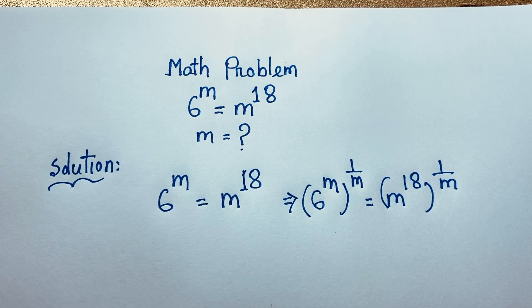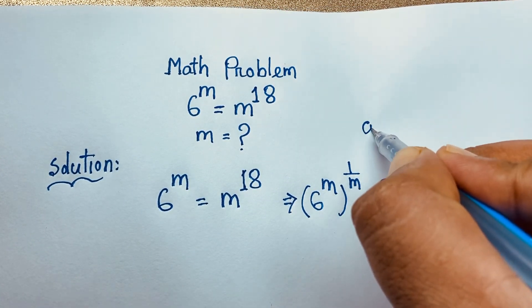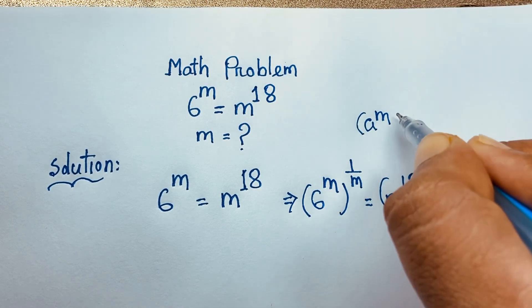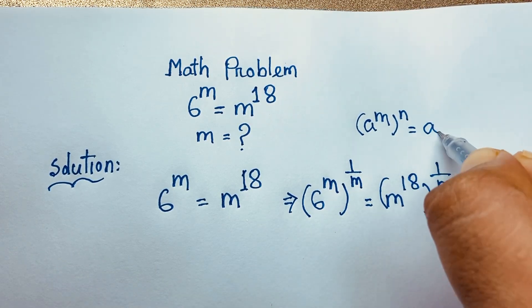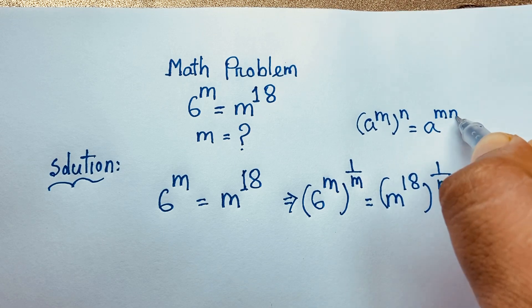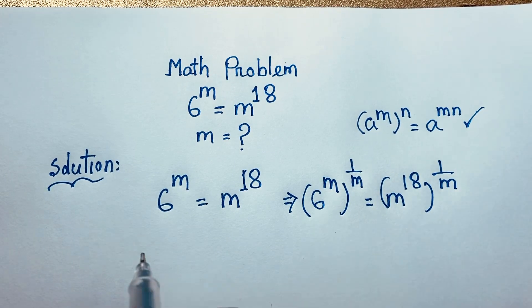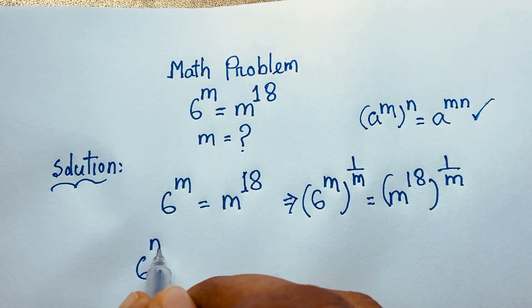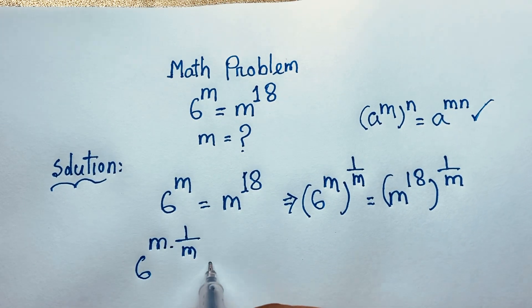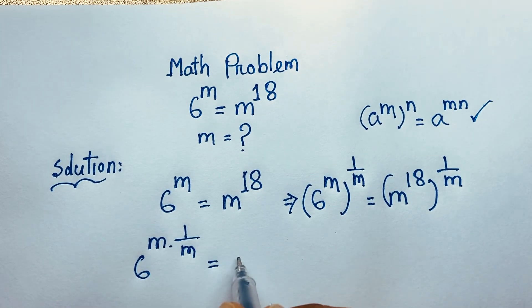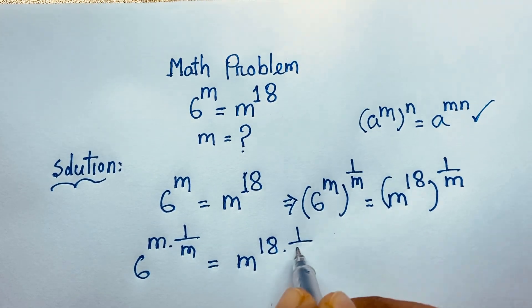Now, according to the exponential formula, we know that a to the power m, bracket whole to the power n, equals a to the power m·n. If I apply this formula, it will be 6 to the power m times 1 over m, is equal to m to the power 18 times 1 over m.